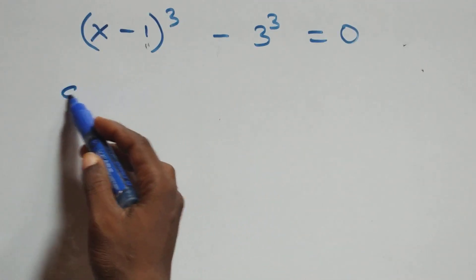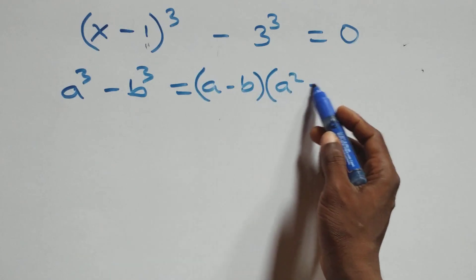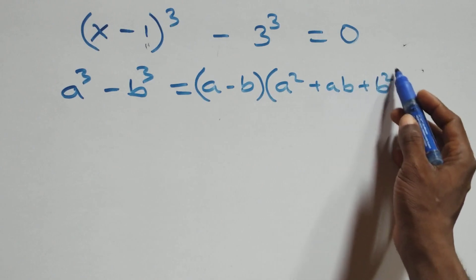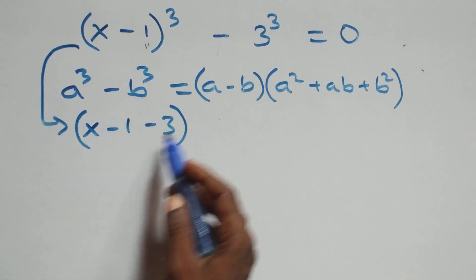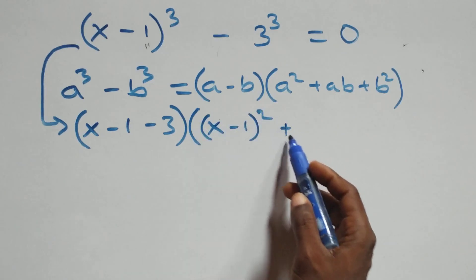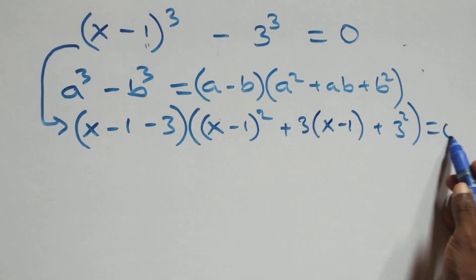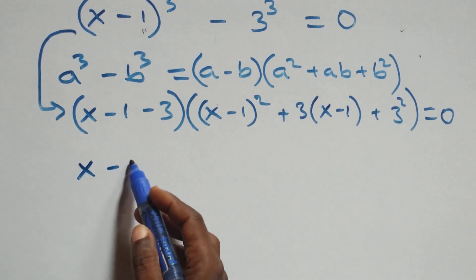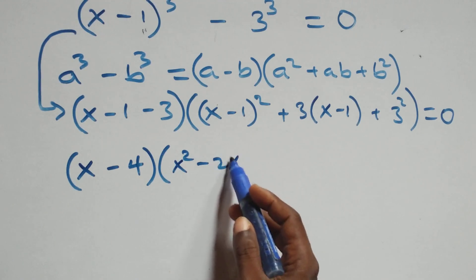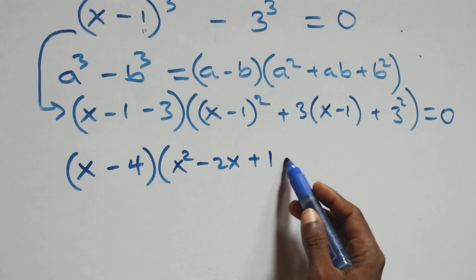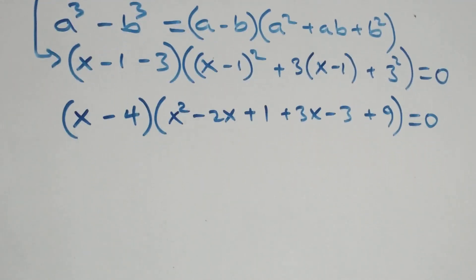For Case 2, we use the difference of cubes identity: a^3 - b^3 = (a - b)(a^2 + ab + b^2). This becomes (x minus 1 minus 3) times (x minus 1 all squared plus 3 times (x minus 1) plus 3 squared) equals 0.